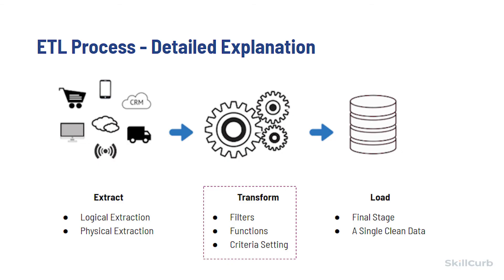Some of the key benefits of this stage over manual transformation is telling the software to take global changes to the data sets. For example, you can eliminate special characters, completely change the layout of data, remove erroneous records, and more.